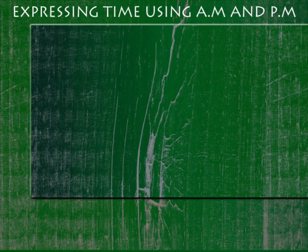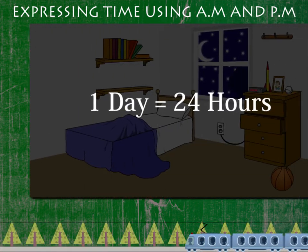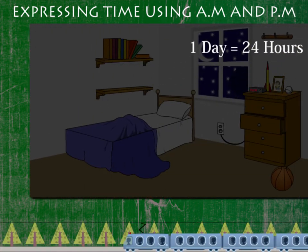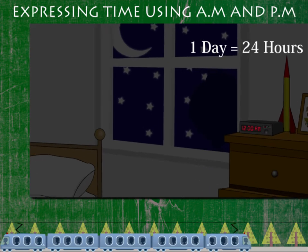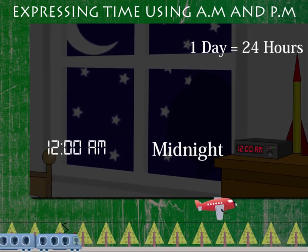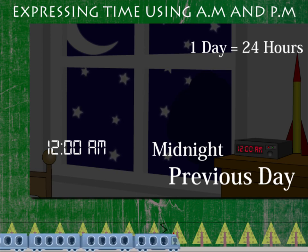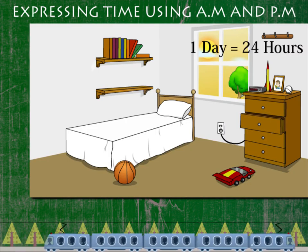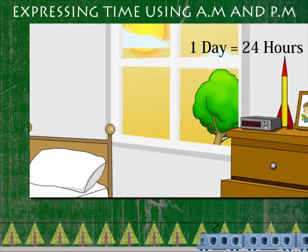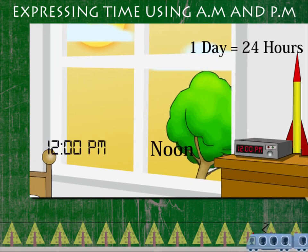Expressing time using AM and PM. It's nighttime and one day has 24 hours. The clock reads 12 AM — it is midnight of the previous 24-hour day. It is noon now; the clock reads 12 PM.